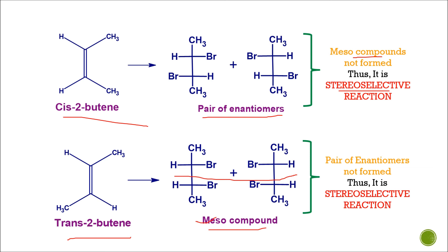These reactions are stereospecific as well, because only cis-2-butene gives a pair of enantiomers and only trans-2-butene gives the meso compound. So this is the classic example for stereoselectivity as well as stereospecificity.